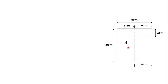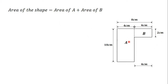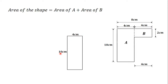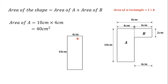I'm going to call this rectangle A and this rectangle B. The area of this shape is the area of A plus the area of B. Rectangle A has a length of 4 centimeters and a breadth of 10 centimeters. The area of a rectangle is length times breadth, so the area of rectangle A is 10 centimeters times 4 centimeters, which gives us 40 centimeters squared.